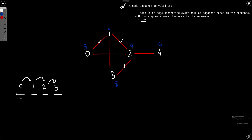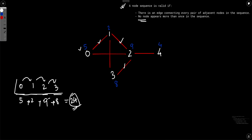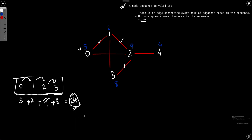We will find the score of this sequence as the sum of scores of every node in it. The score of node 0 is 5, node 1 is 2, node 2 is 9, and node 3 is 8, so the total score of sequence 0, 1, 2, 3 is 24. We have to find all valid sequences, compute their scores, and take the maximum. Hope the problem is clear — now let's try to solve it.